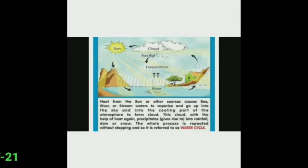Once again, in water cycle, the heat from the sun or other sources causes sea, river or stream water to vaporize and go up into the sky and into the cooling part of the atmosphere to form clouds.